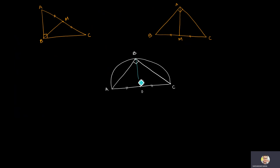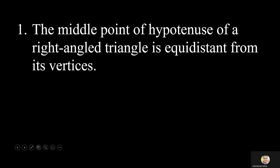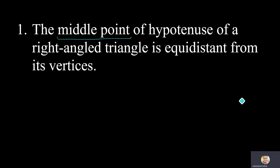Furthermore, BO is also a radius of the same circle, so BO is also equal to AO, which is also equal to CO. This means the right angle triangle fits inside a circle where the hypotenuse is the diameter, and the midpoint of the hypotenuse is the center — equidistant from all vertices.